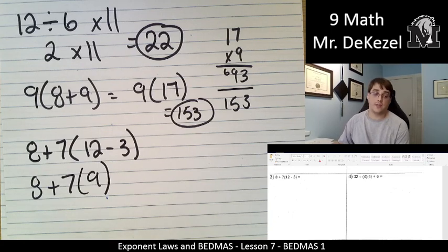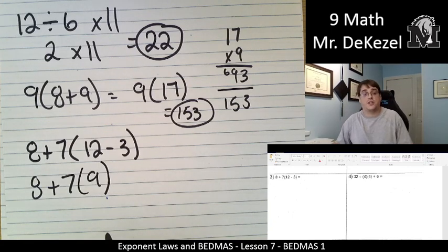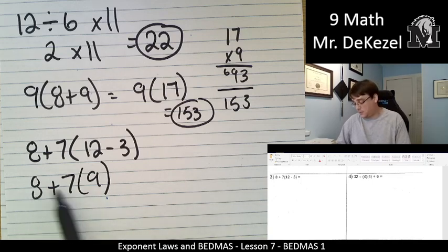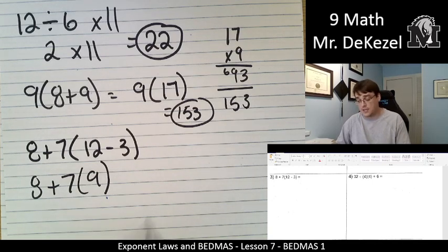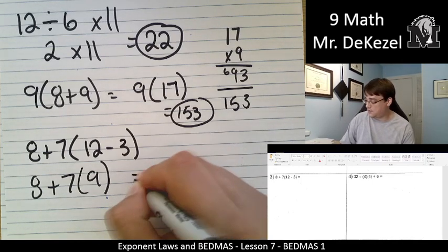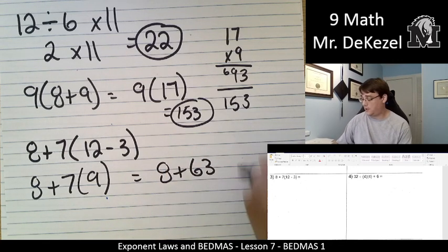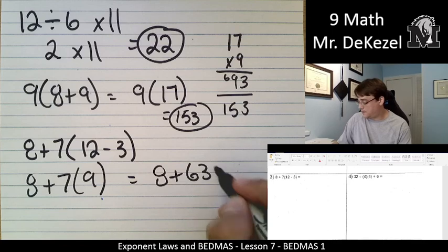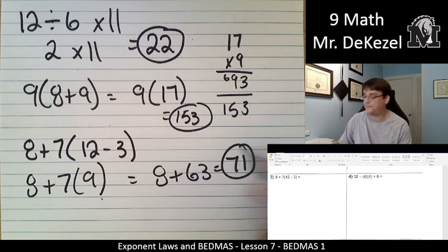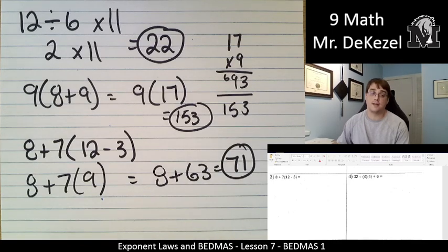Now we have no exponents. So we're going to do multiplication and division from left to right. So multiplication and division. 15 times 9 is... actually 7 times 9 is 63. So this is 8 plus 63, which ends up being 71 for our answer.